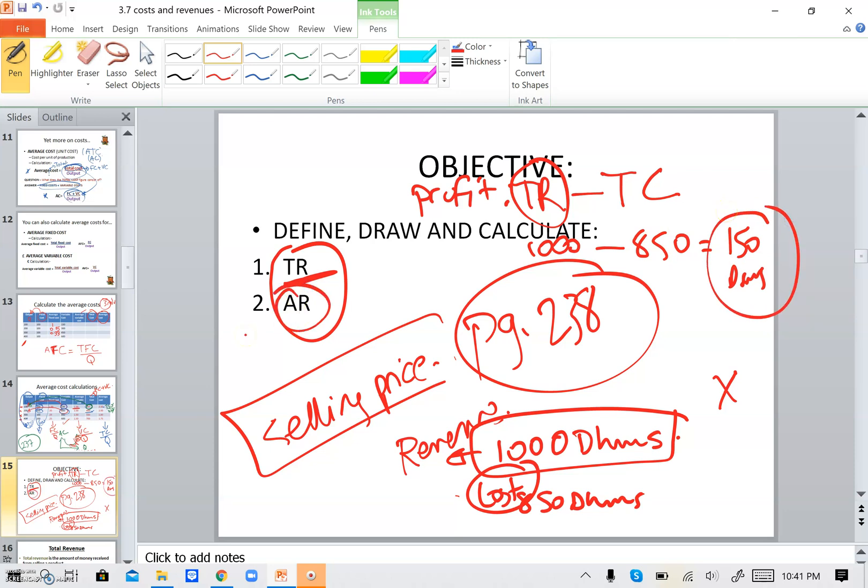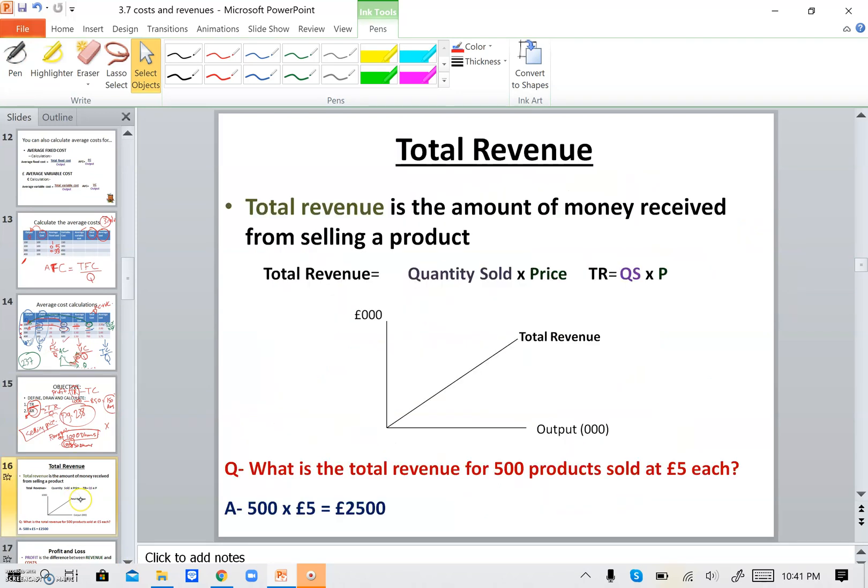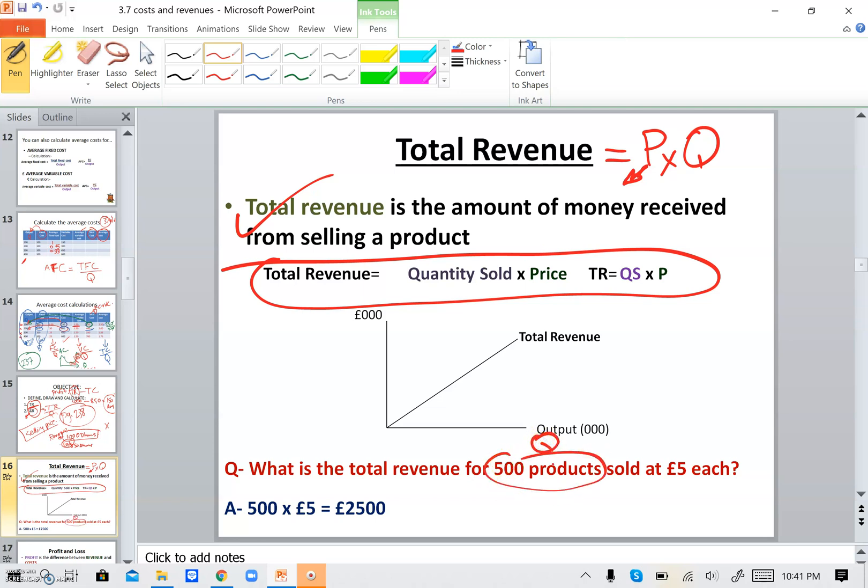Average revenue, same thing. It's average. So we always divide the totals over the quantity. So it would be total revenue divided by quantity. Let's see what is total revenue. Total revenue is the amount of money received from selling a product. We just said it when we were explaining the objective. And how can we find it? There is a formula for it. Total revenue is quantity sold times price. So total revenue is always price times quantity. Price, I'm talking about selling price. For example, here, what is the total revenue for 500 products? This is the quantity sold at £5 each. So I need to find the total revenue. I multiply these by each other. 500 times 5, it will give me 2,500. This is our total revenue.